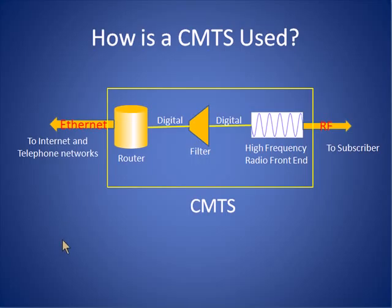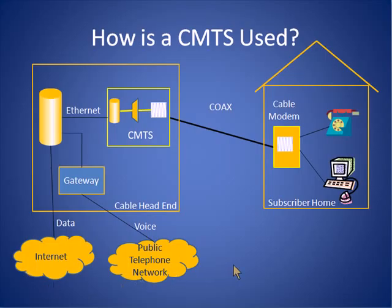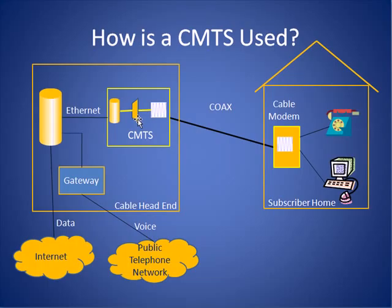Now let's see how the CMTS sits in a cable network. The CMTS typically resides in a cable head end or a cable central office. Coax or fiber optic links coming from subscriber homes enter the cable modem termination system. A subscriber is connected to a cable modem and is taking both voice and internet data services from the cable MSO. The cable modem at the subscriber premises modulates this information and puts it onto the coax. The CMTS terminates the coax and demodulates the information. After passing through a filter, it enters a router and routes the information to a much larger router, also typically co-located at the cable head end. This router then passes voice information onto a gateway, where it eventually terminates on the public telephone network, and data is passed along to the internet.